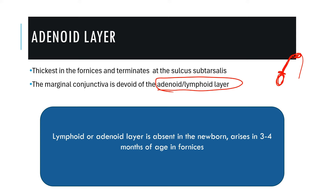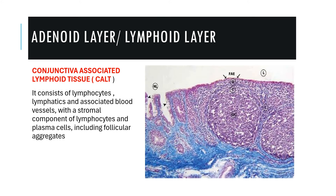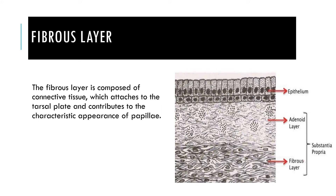Just as we have mucosa-associated lymphoid tissue in the respiratory system, in the eye we have conjunctiva-associated lymphoid tissue, also called eye-associated lymphoid tissue, consisting of lymphocytes, lymphatics, and plasma cells forming follicular aggregates to contribute to immunity in the eye. The fibrous layer is composed of connective tissue that attaches the conjunctiva to the underlying structures — it attaches firmly to the tarsal plate and also firmly to the limbus.